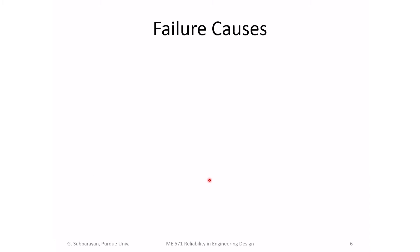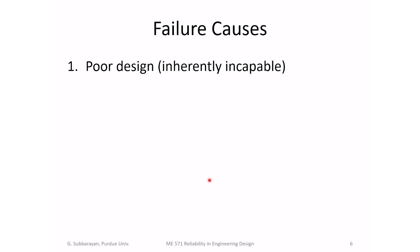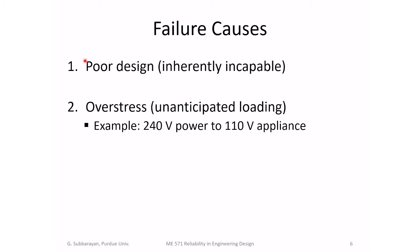Why do products fail? The first reason is poor design — inherently incapable. This is really the cause we will address in this class. We want to ensure that our designs meet our reliability requirements, and the tools and techniques to do that are the focus of this course. The second reason why products might fail is overstress — unanticipated loading.